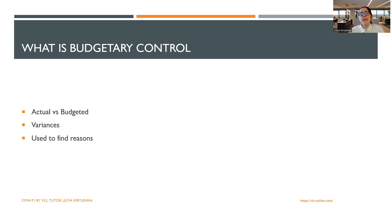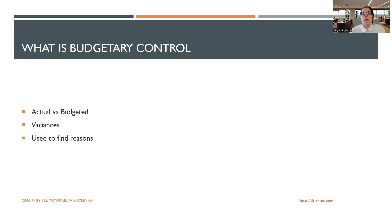We also need to use these variances — these changes, these deviations, the actual versus budgeted — to find out the reasons for events. We pay great attention to our adverse variances, to cases when we did not achieve the budget. But even more, we need to pay attention to positive effects, because if we had something done greatly, we want to repeat it.